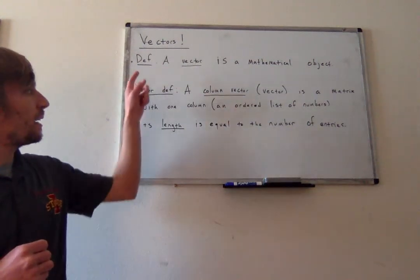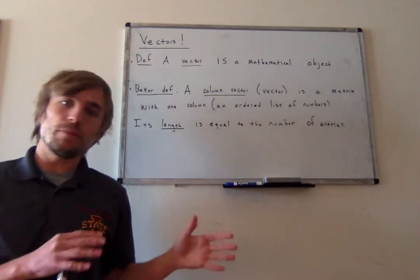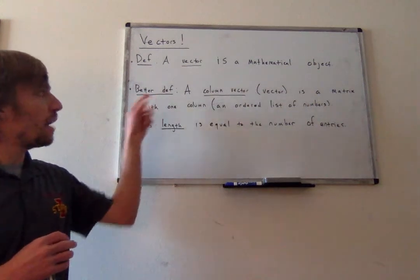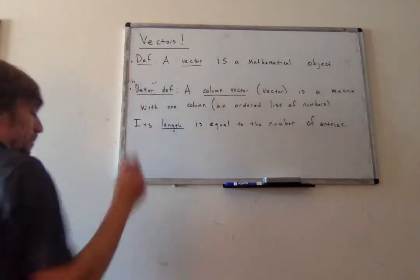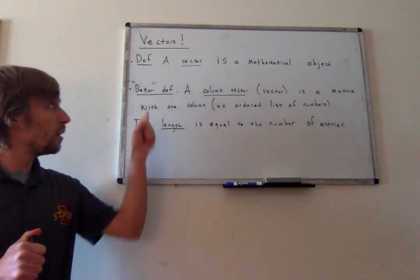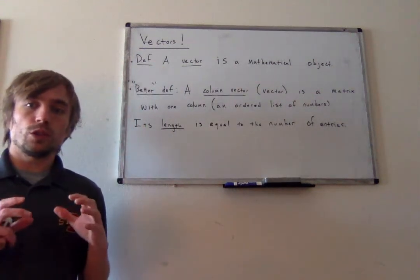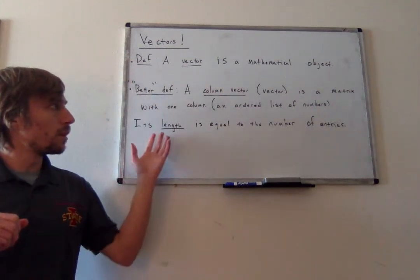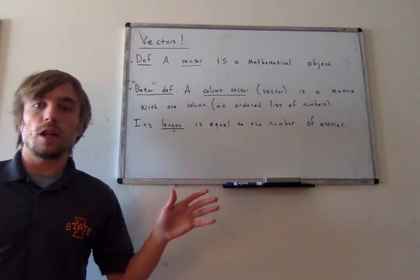I have a definition of vector which is the more mathematical definition of how we will think about vectors later on. I also have what I put here as a 'better' definition — actually I think that one is better. But for the purposes of what we will be doing now, this is the definition we will use. As we move forward, we will start to abstract the way we look at vectors, trending towards thinking about vectors as a mathematical object.